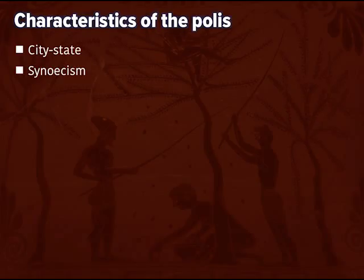One of the things that makes the polis distinct is the way in which it forms. In the Dark Age, people fled the cities and went out into the countryside. For a long time, the basic economic structure was essentially agriculture. People were living in farming villages that were not particularly centralized and not particularly stratified in terms of class — the main thing that mattered was whether you owned property.